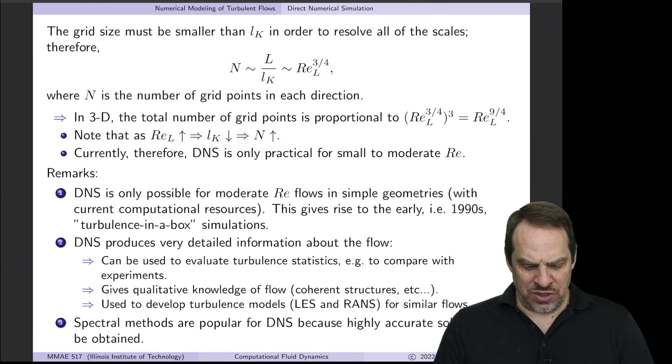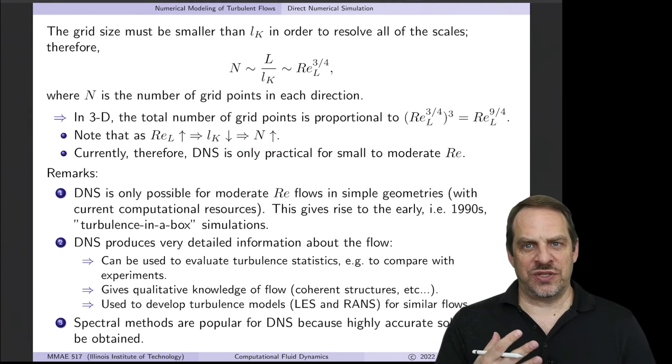As the Reynolds number goes up, the Kolmogorov scale goes down, down, down, and we need more and more points in order to faithfully resolve every single one of those scales. And that's what's denoted here. Reynolds number goes up, Kolmogorov scale goes down, and the number of points goes up dramatically.